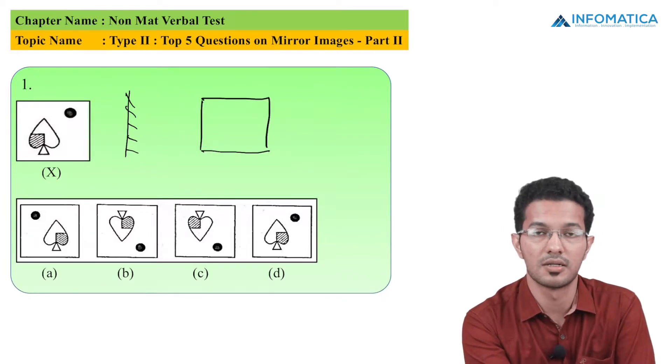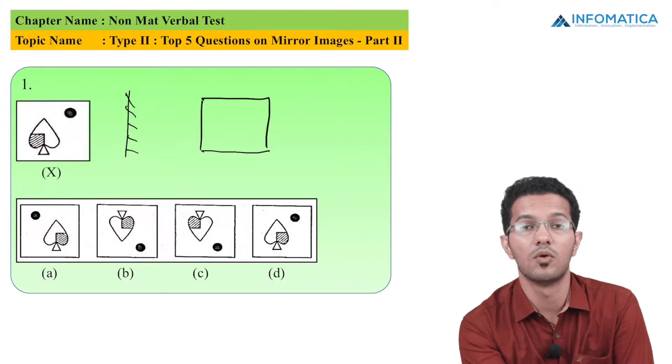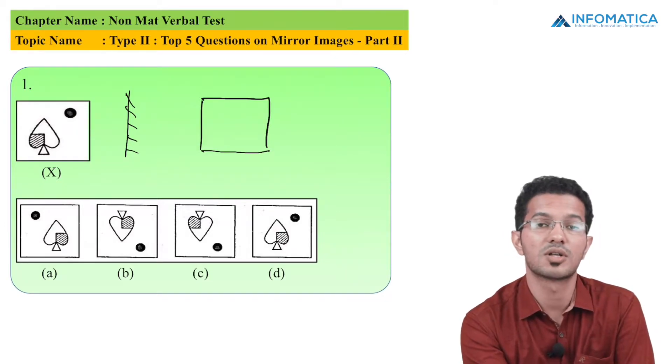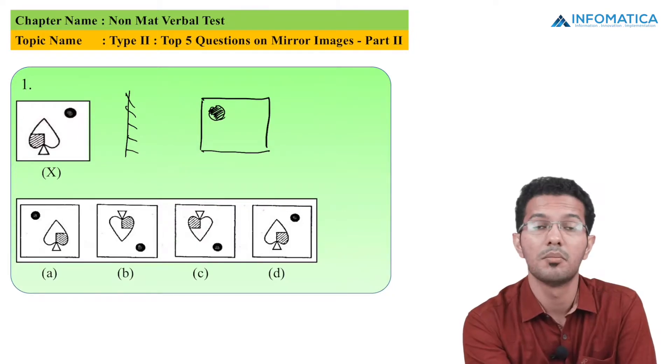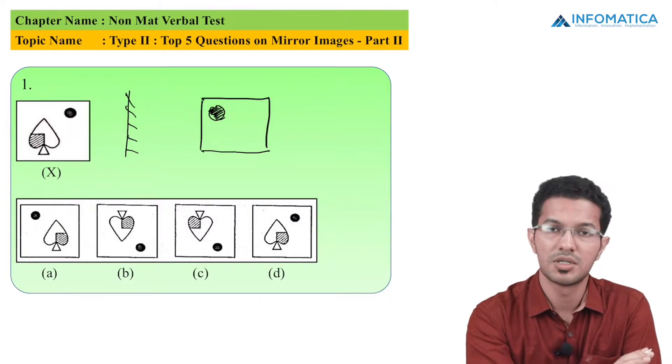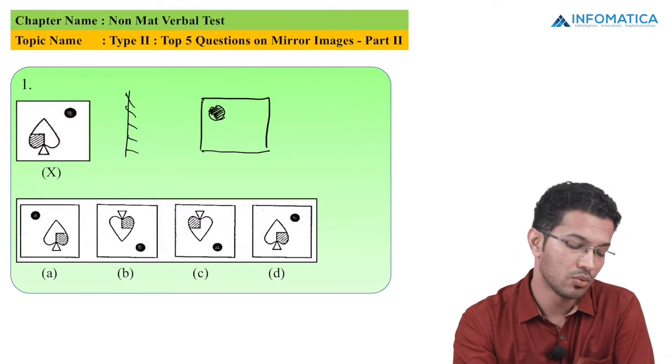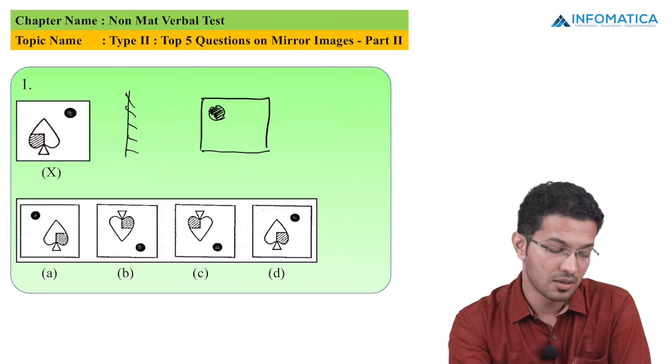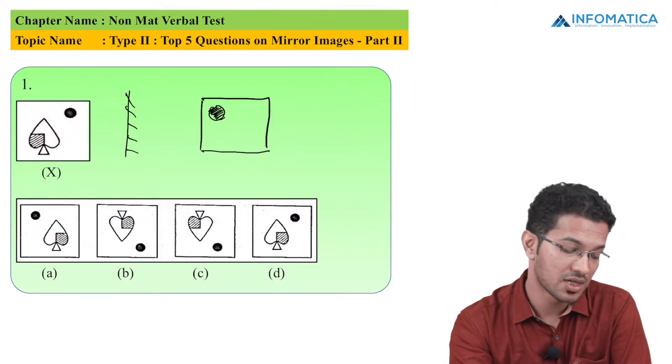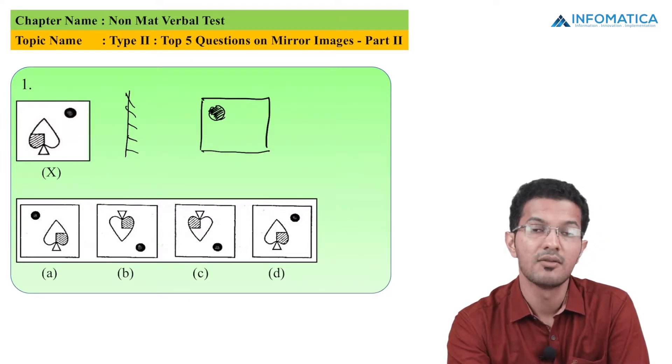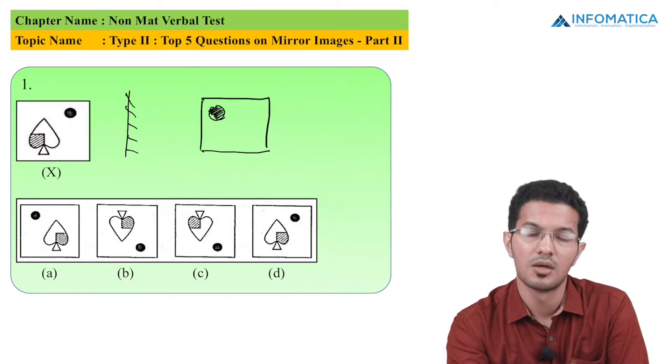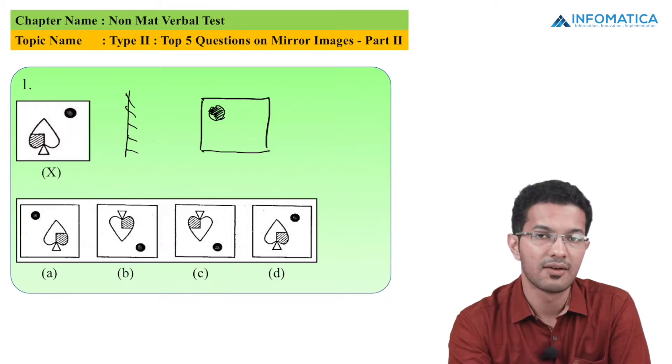So students, we will start with the shaded circle. The shaded circle was on the right hand side. It will come to the left side when I create my mirror image. Now I will go to the leaf side. If we see the 4 options, I know that the circle on the left side is just in option A. If you look at options B, C and D, we are getting the circle on the right hand side, either on the top or on the bottom. So without going any further, we can definitely say that the answer to this question will be option A.